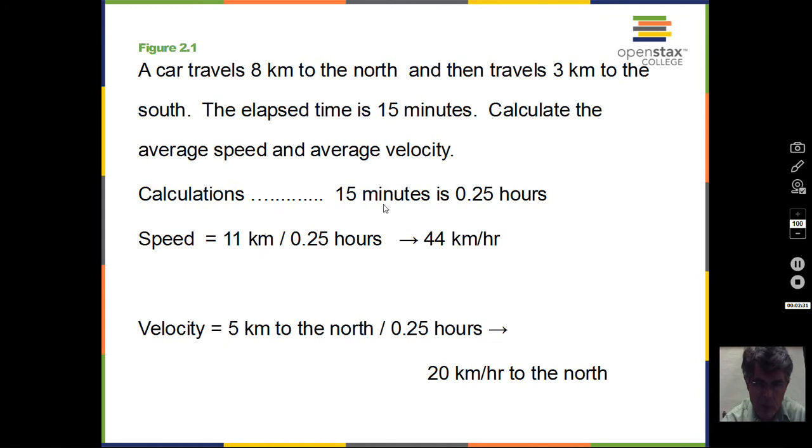Calculate the average speed and velocity. My first step, since I want hours, kilometers per hour, not kilometers per minute, I'm going to convert 15 minutes into hours. 15 minutes is a fourth of an hour, so 0.25 hours. The total distance traveled, the car went eight kilometers to the north, then three kilometers to the south. Eight plus three is 11 kilometers for distance traveled. Divide by 0.25, you get 44 kilometers per hour.